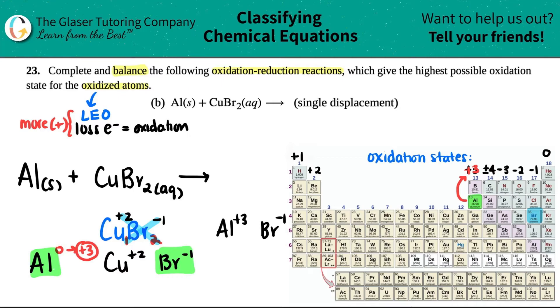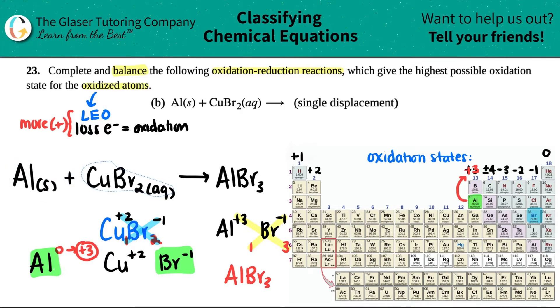Take those charges, crisscross them down to tell me what the compound is. This three crisscrosses down telling me that there should be three bromines in my compound. And this one crisscrosses down telling me that I should have one aluminum. So I have a compound of AlBr3. So that's my first part.